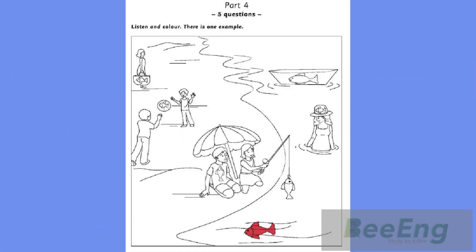Test three. Listening. Part four. Look at the picture. Listen and look. There is one example. Can you see the fish in the water? Yes, I can. Well, color that fish red. Pardon? Color the fish in the water red. Can you see the red fish in the water? This is an example. Now you listen and color.